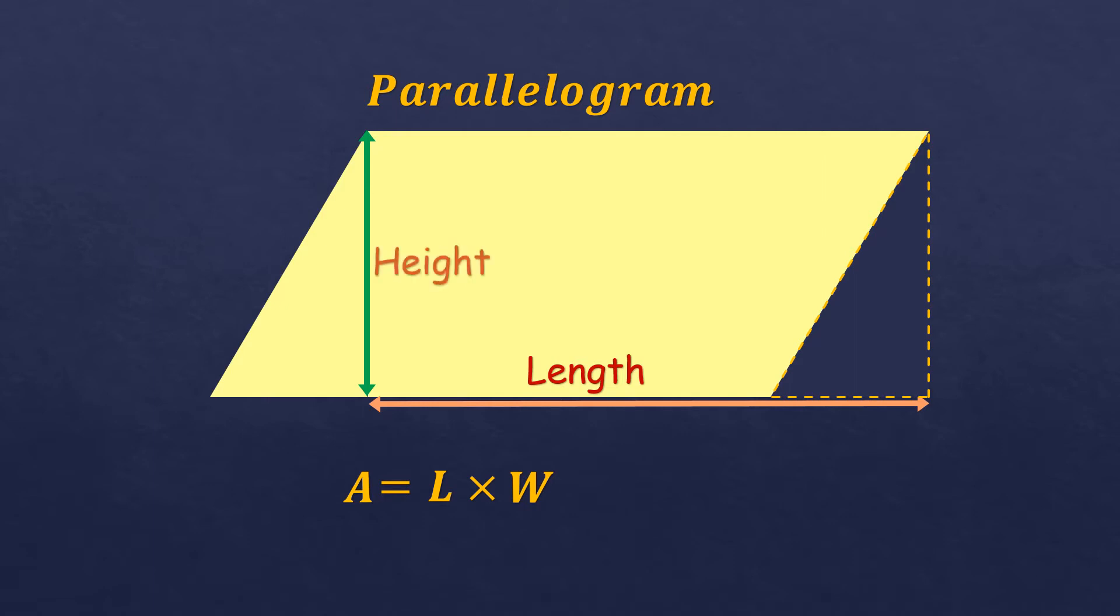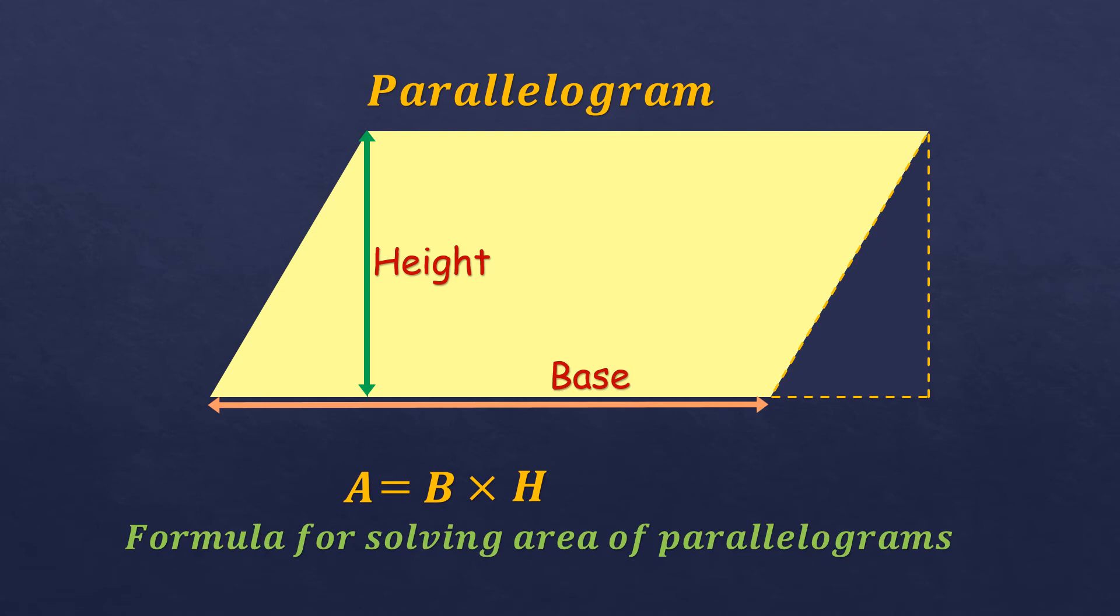The length is now called the base, but the measure is just the same. It's just that this part is moved, but with the same measure. The formula is just the same—we change the length into base and the width into height. So the formula for solving the area of parallelograms is base times height.